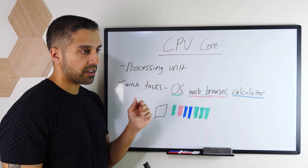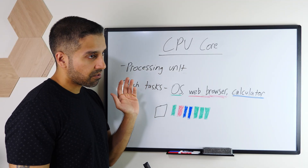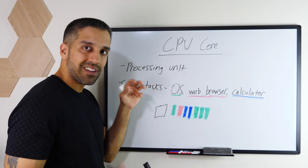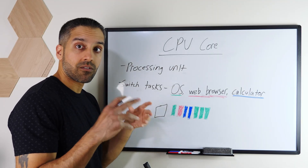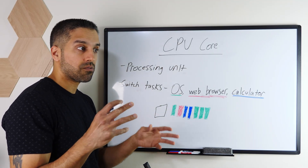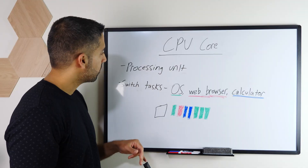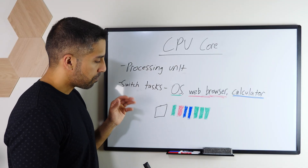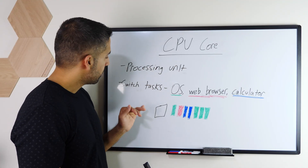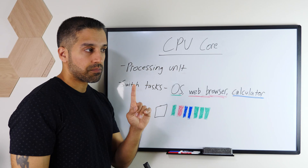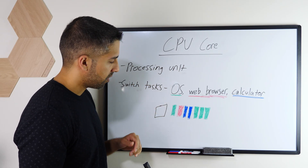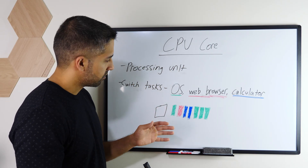Talking about a CPU core — just one for now, we'll get into multi-core shortly. A CPU core functions as an independent processing unit within the processor itself. It's physically within the processor. Back in the day, you had one-core processors on computers; even early smartphones like Android had single-core processors.